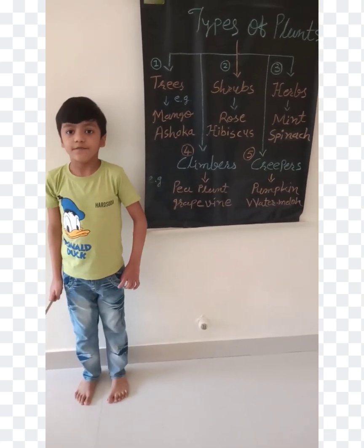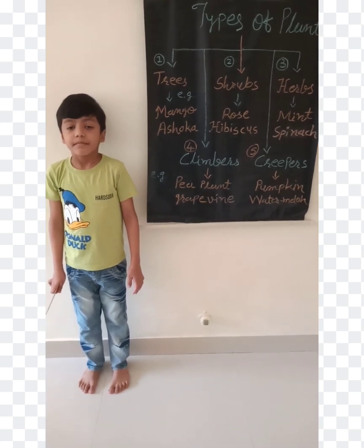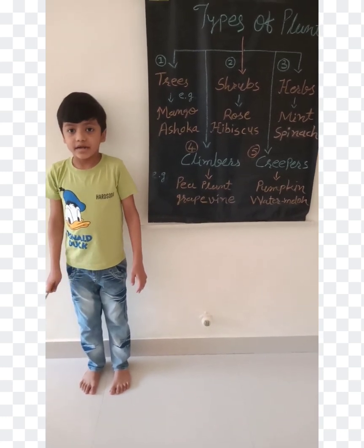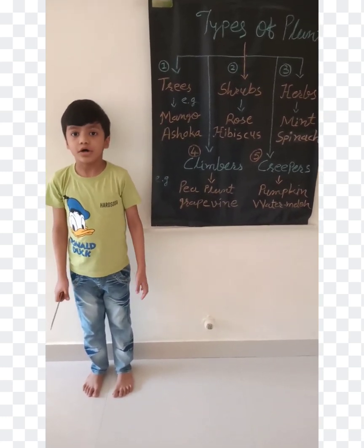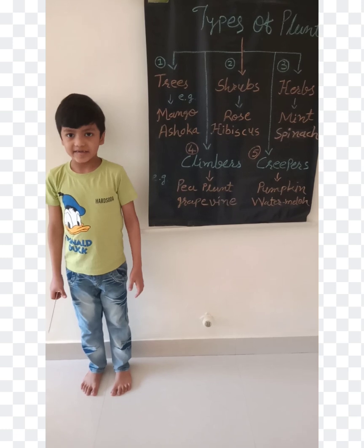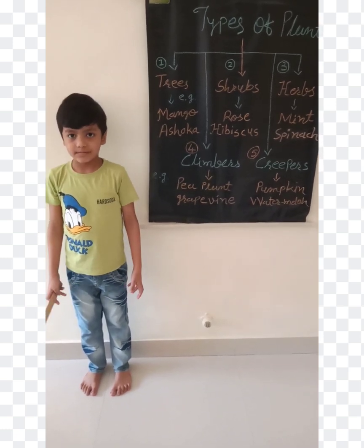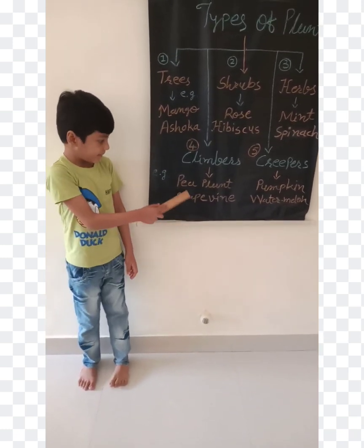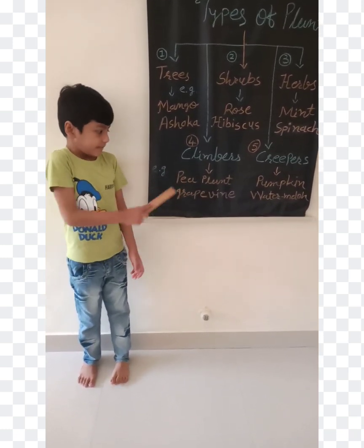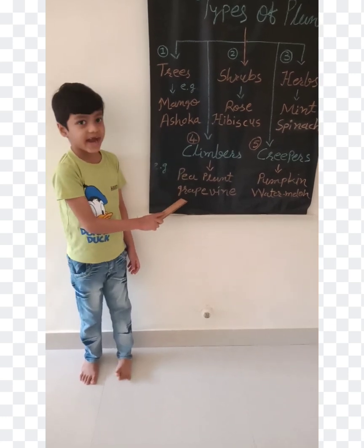The fourth type is climber. Climbers have a weak stem. They climb by taking the support of other plants, stakes, and walls. For example: pea plant, grapevine, and money plant.